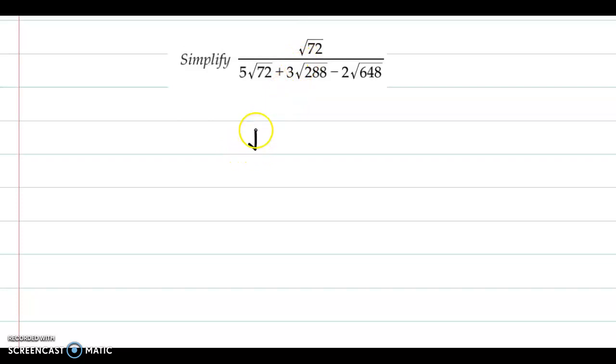Here we have the expression root of 72 divided by 5 times root of 72 plus 3 times root of 288 minus 2 times root of 648. Now if you observe, we have root 72.